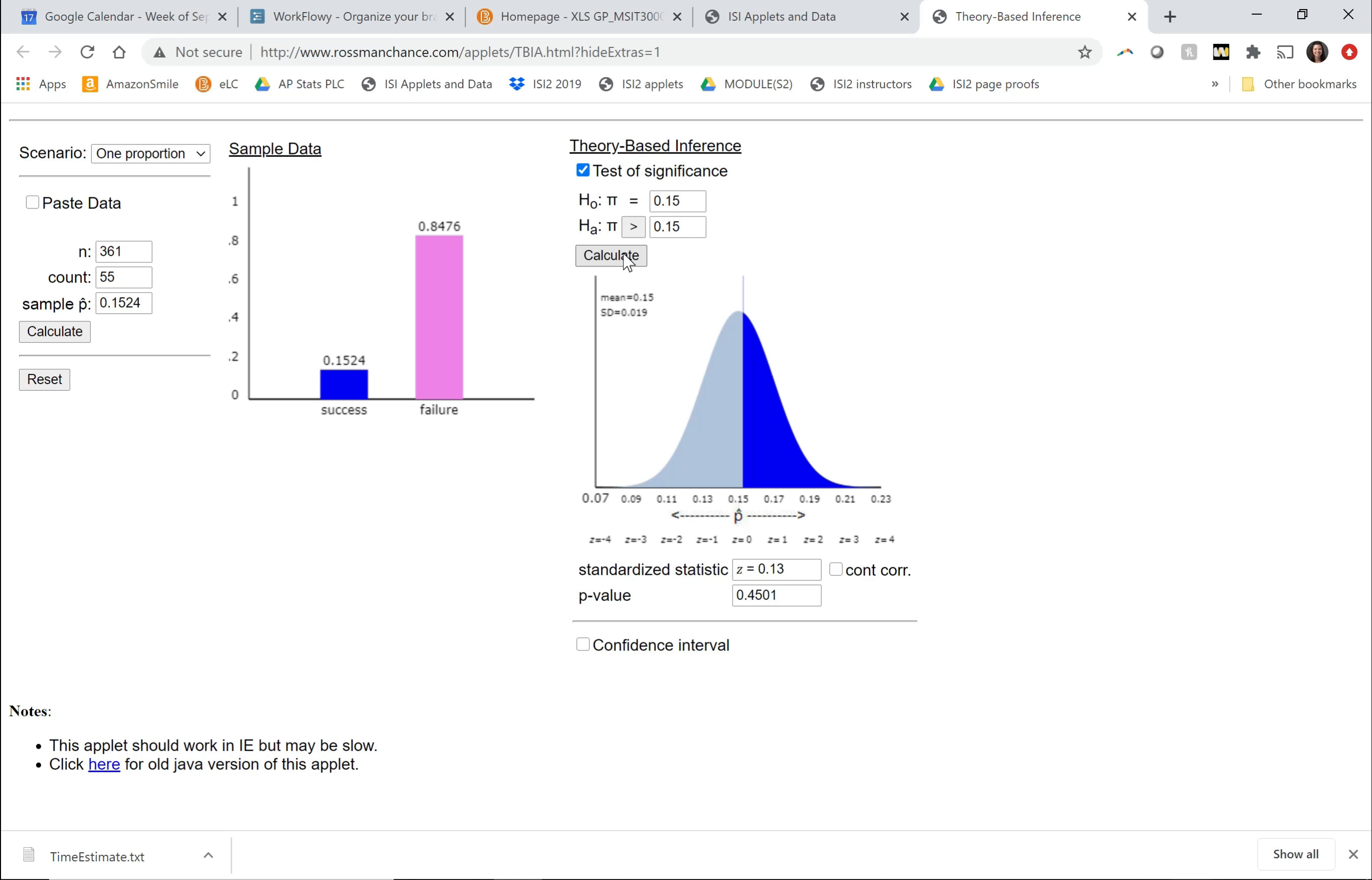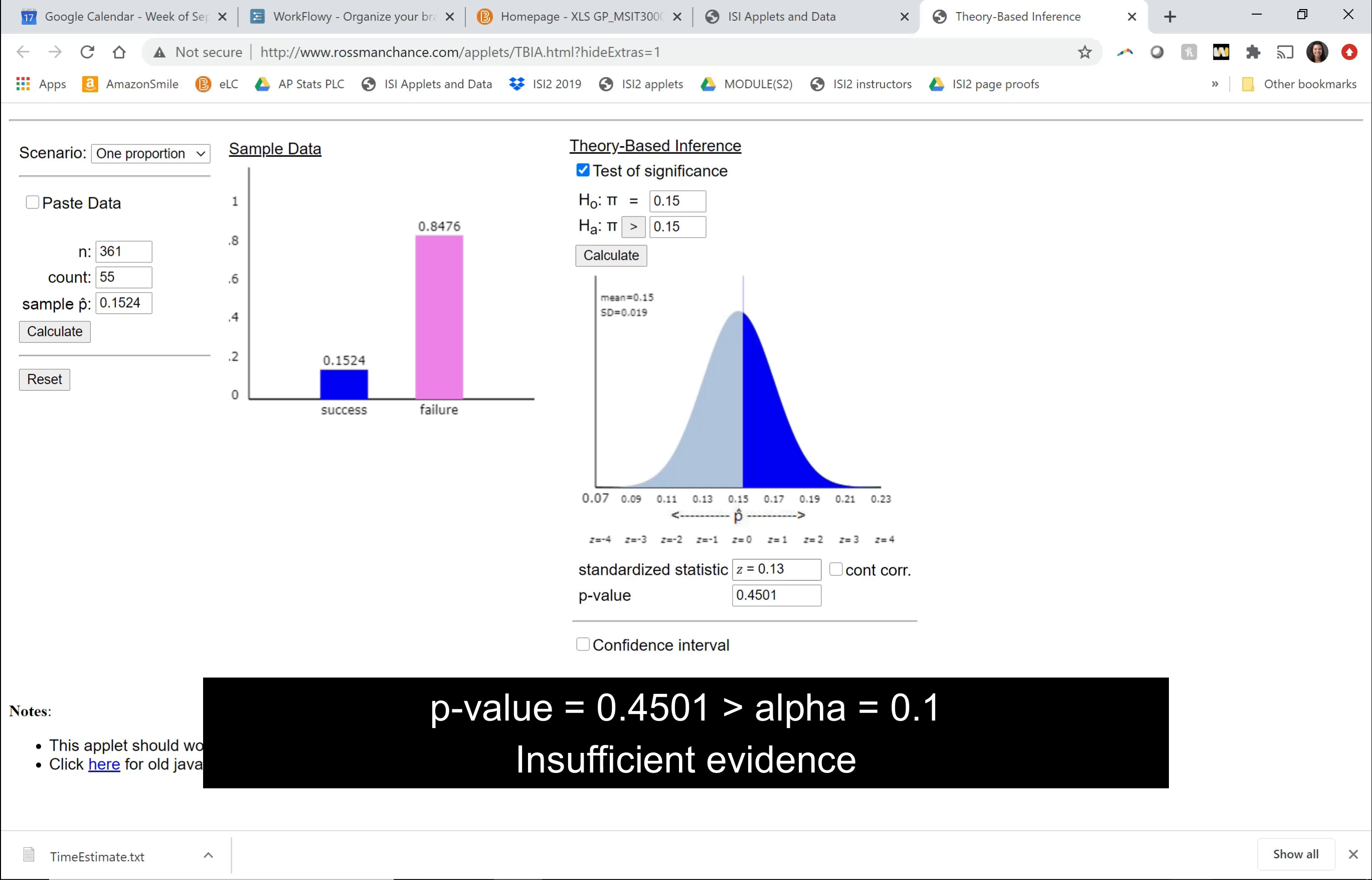So not surprisingly, with the count only 55, just barely more than expected, our p-value is very large, 0.45. Our evidence is very weak. So this is not strong enough.